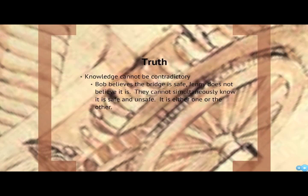The other side of this is truth. Knowledge can't contradict itself. Bob believes a bridge is safe, but Jenny doesn't believe it is because she's done some engineering studies. They cannot simultaneously know it's safe and unsafe. A good example of this in the public eye is the age of the earth — the idea pervaded by some that the earth is very young, around 6,000 years, whereas the entire scientific community understands the earth to be 4.5 billion years old. Both of these cannot be true, so one has to be wrong. That's what the search for truth is all about in science.